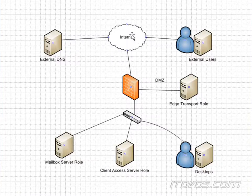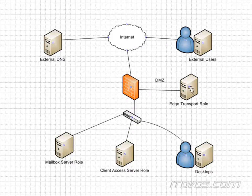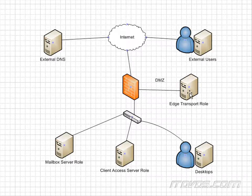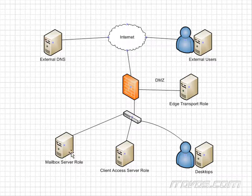So let's take a look at this. We've got the internet out here, we've got our external DNS, external users — everybody out there on the internet. We've got our firewall that protects our network. We've got our DMZ, or Demilitarized Zone, that we have servers in that are normally not part of our domain or our internal network. These servers communicate with our external users or external mail servers directly through a firewall. And then in order to communicate back to our internal servers, the Edge Transport Server would send it back through the firewall and down into our internal network. Here's our internal network — we've got our desktops, our laptops, all of our internal users — and then we've got a Client Access Server role server and a Mailbox Server role server.